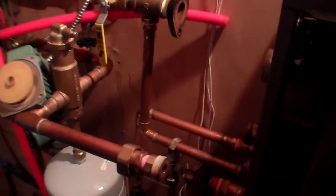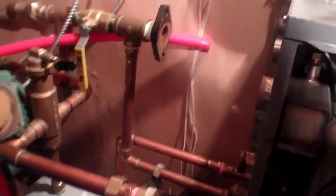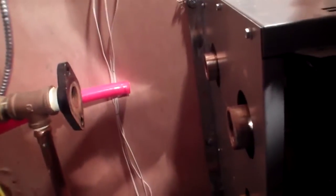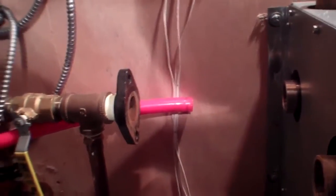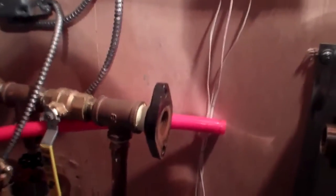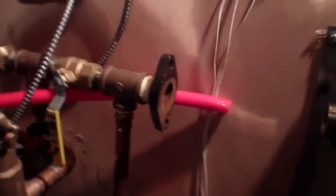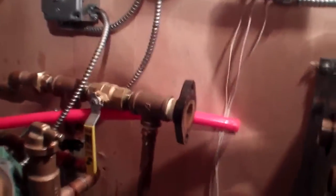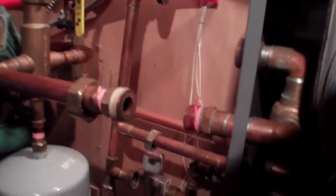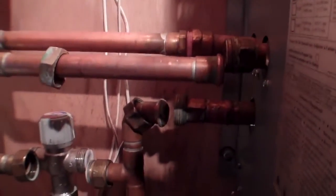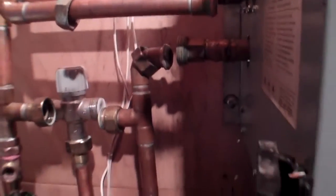So as you can see here just got everything all disconnected from the heat exchanger. Got our pump removed. Got our domestic hot water outline removed. And got our other valve here removed. And as you can see everything's pretty well disconnected.